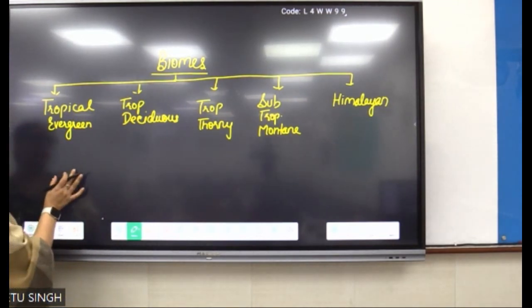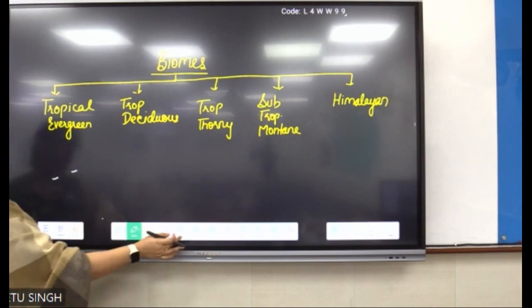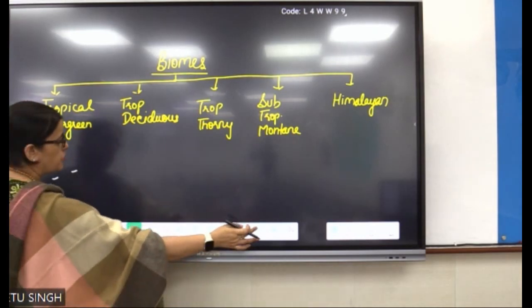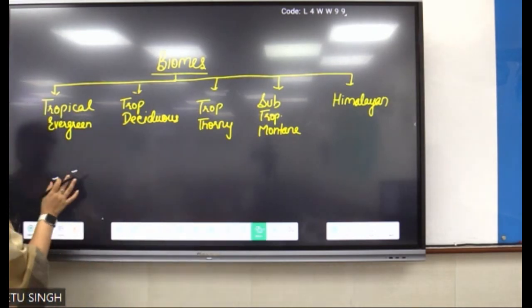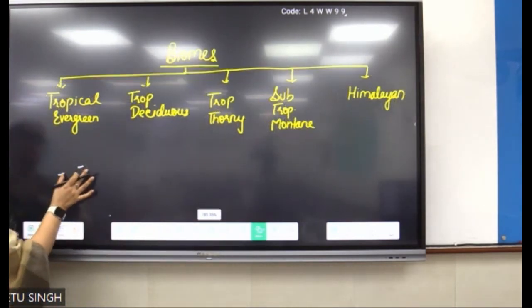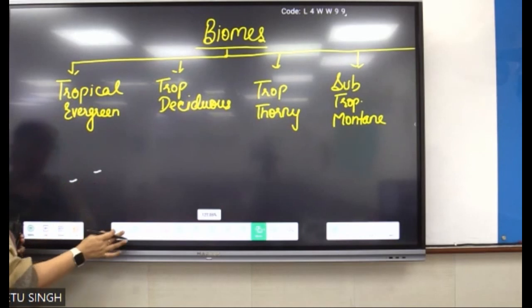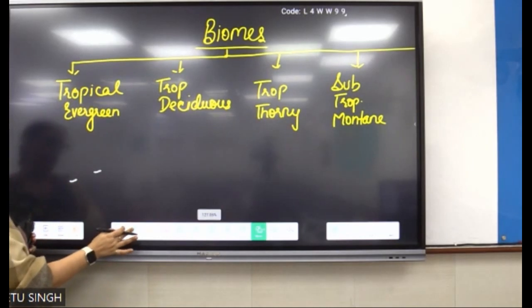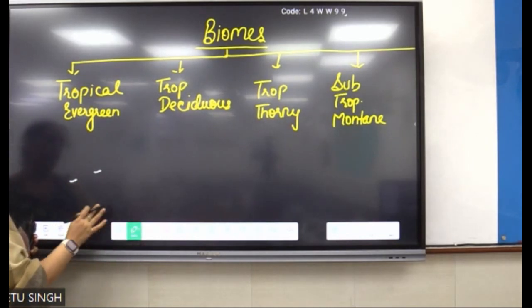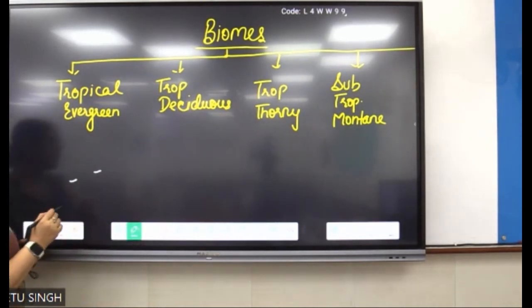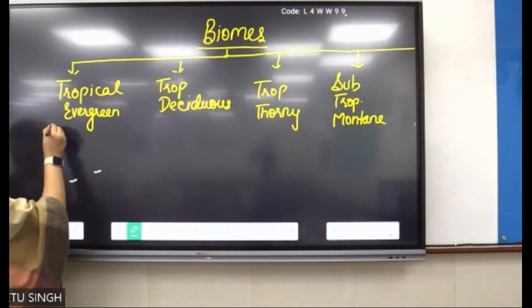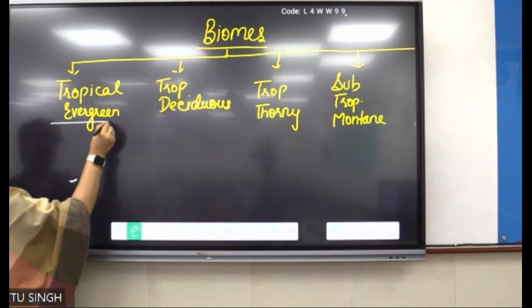First biome: Tropical Evergreen. I am first picking up this column. How many subcategories do I divide tropical evergreen into? Now that is very important.